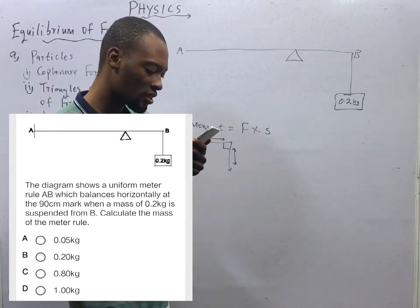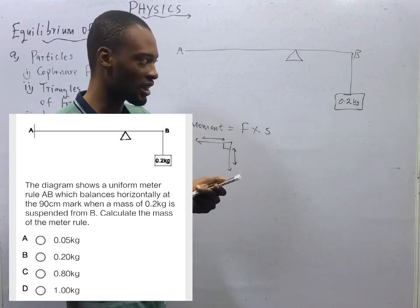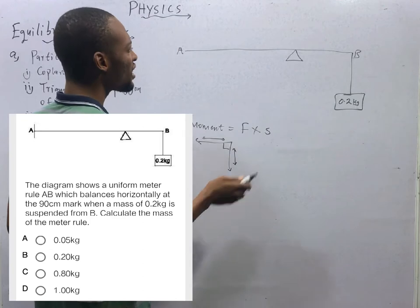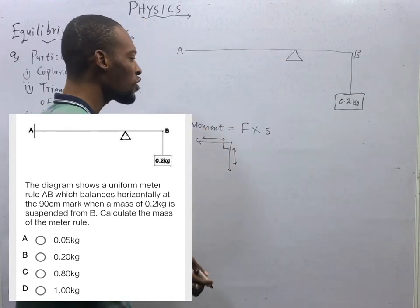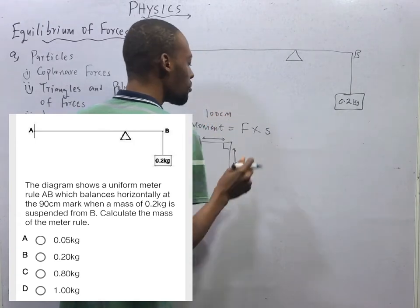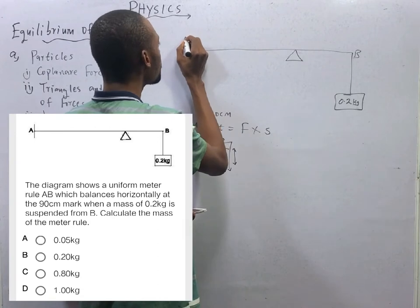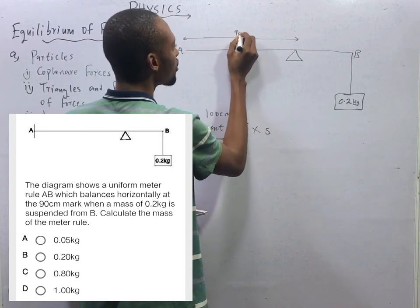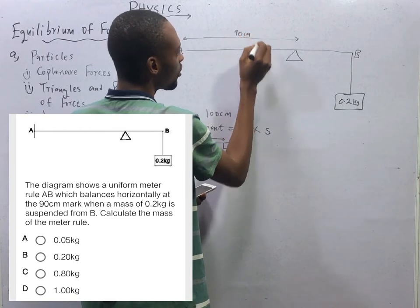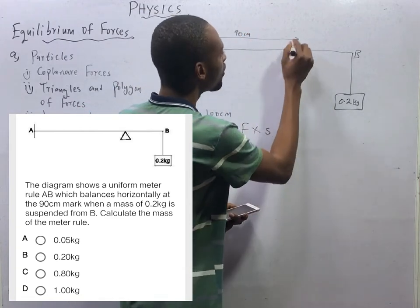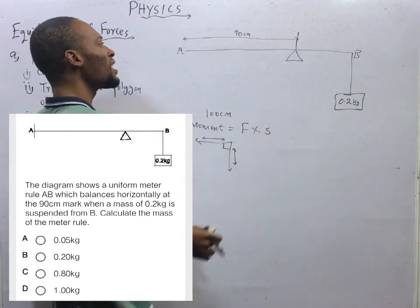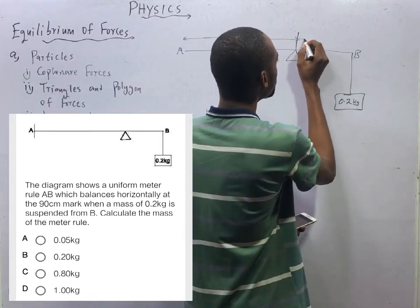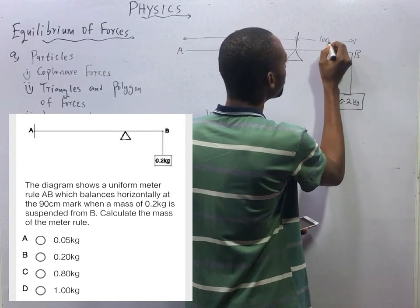We are told that the meter rule balances at the 90 cm mark, which means this is the meter rule but the balance point is the 90 cm mark. The maximum number in a uniform meter rule is 100 cm. This meter rule is balancing at 90, which means from one end to the pivot is 90 cm, and the remaining portion is 10 cm.